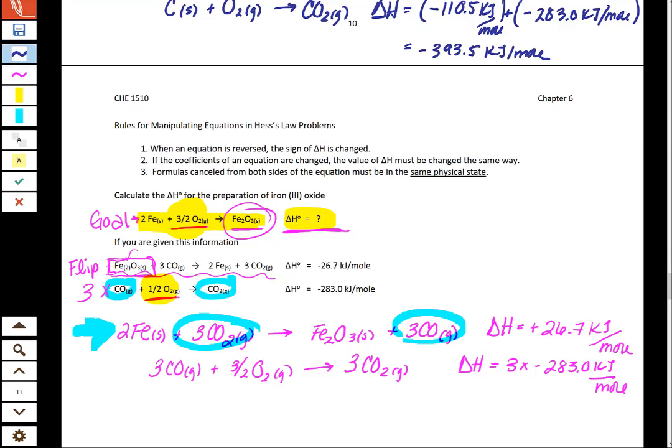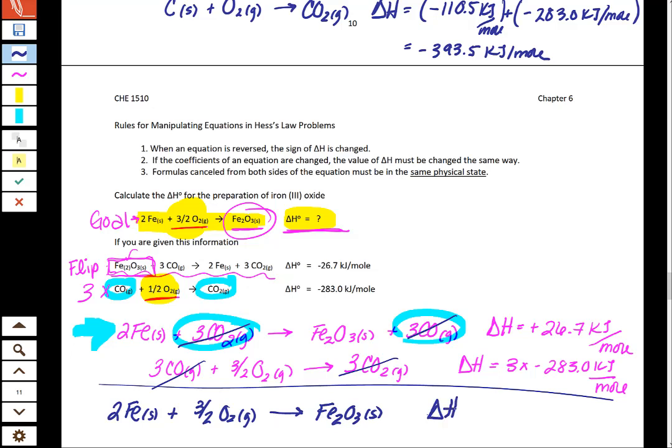So then I look for my CO2 and my CO2 and they cancel. My CO and my CO and they cancel. And when I add these equations together I'm going to end up with two irons plus three halves O2 make Fe2O3 solid and then I'll add the delta H's together.